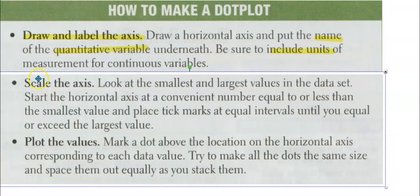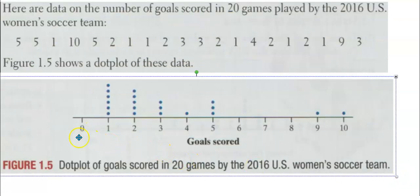If you look at this one, this is a discrete variable but it still tells us what it is—goals scored. So that's good enough for your labels. Scale your axis. Look at the smallest and largest values of our data set. Start the horizontal axis at a convenient number equal to or less than the smallest value. Place the tick marks at equal intervals until you equal or exceed the largest value. When I look up here, you can see we have our number of goals scored and we go from zero to 10.